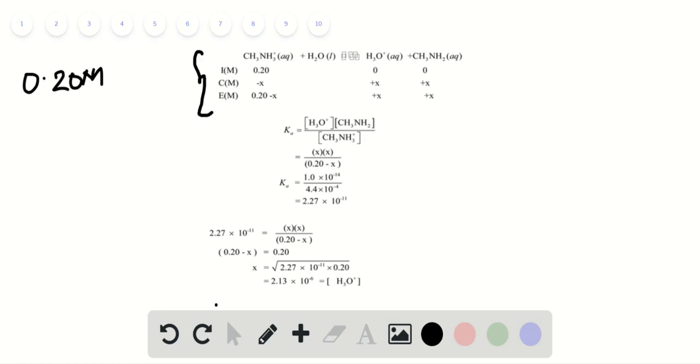Substituting the values into the KA formula, the value of X is 2.13 × 10^-6, which is the concentration of hydronium ion.